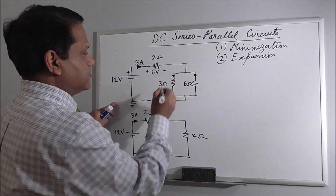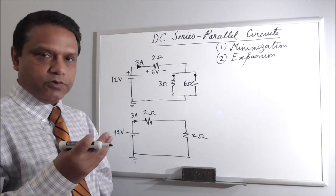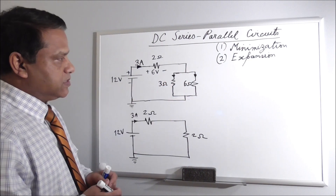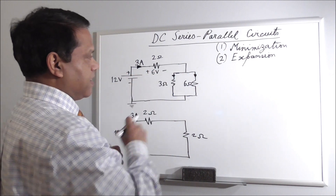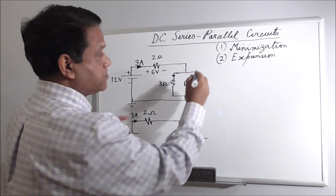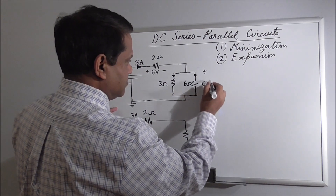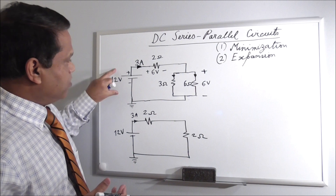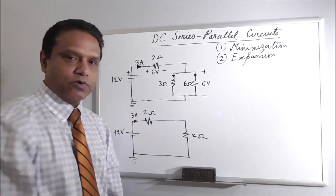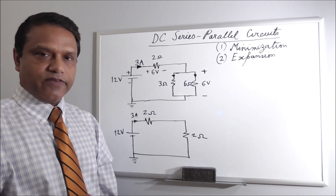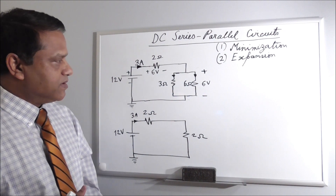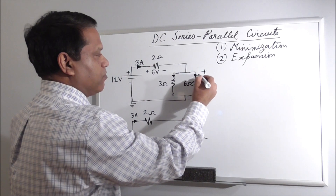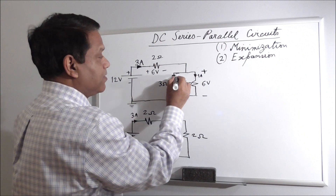Now the question is, what is the current through these two resistors? We can do it two ways. One way would be finding the voltage across them, then dividing the voltage by their resistor value. This is 6 volt, and so this will be 12 minus 6, also 6 volt. We are actually applying KVL here — Kirchhoff's voltage law. This is 12 volt and this is dropping 6 volt, so this has to be 6 volt. So this 6 volt will be both across this resistor and this resistor. So this current will be 6 by 6, which is 1 ampere. This current will be 6 by 3, which is 2 ampere.